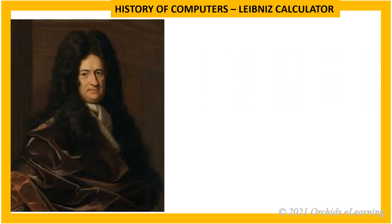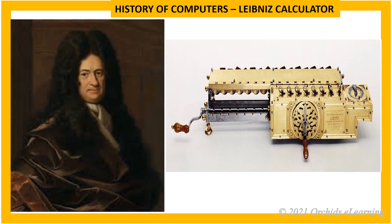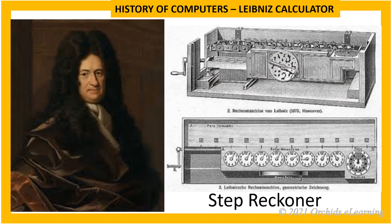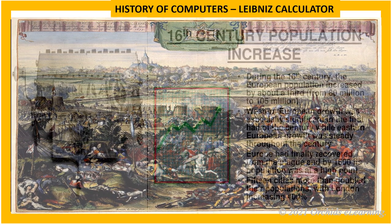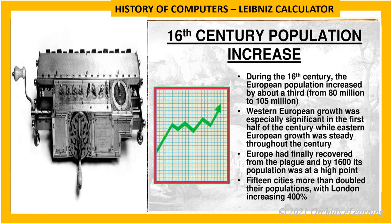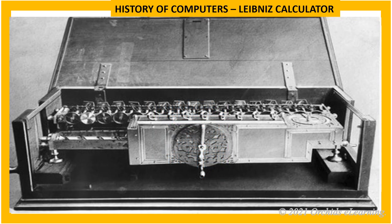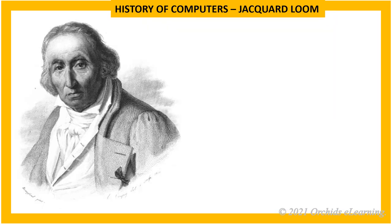Leibniz Calculator: In 1673, Gottfried von Leibniz invented a calculator known as the Leibniz Calculator, also called the Step Reckoner. It was superior to the Pascalin — it could add, subtract, multiply, and divide numbers. The Leibniz Calculator was used for various purposes in trade and travel, for example, to check the increase in population and the demand for clothing, food, and other basic commodities.